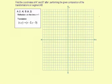Find the coordinates of A double prime and B double prime after performing the given composition of the transformations on segment AB.